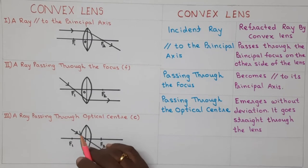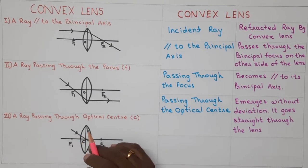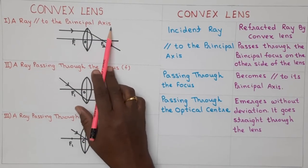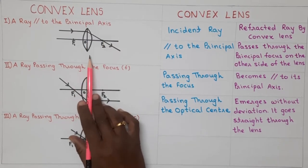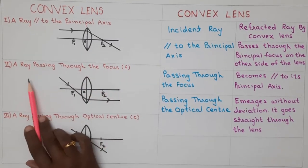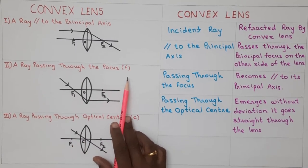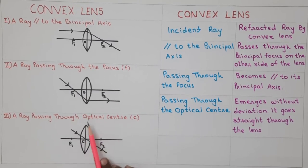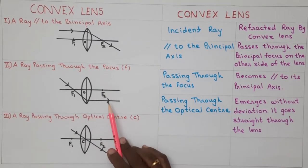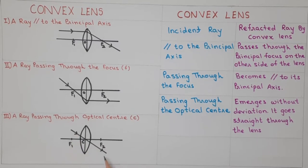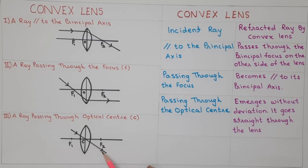Let's see image formation in lenses using ray diagrams. For a convex lens, a ray parallel to the principal axis, after refraction through the lens, passes through the principal focus on the other side. A ray passing through the focus of a convex lens becomes parallel to the principal axis after refraction. A ray passing through the optical center of the convex lens emerges without deviation — it goes straight after refraction.